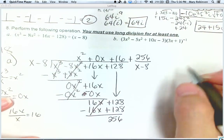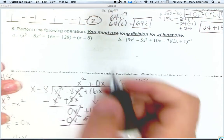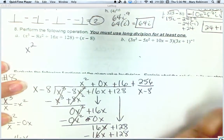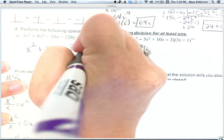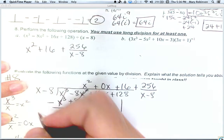So when we write our answer, we don't need the 0x term. So it would be x squared plus 16 plus 256 over the divisor x minus 8.